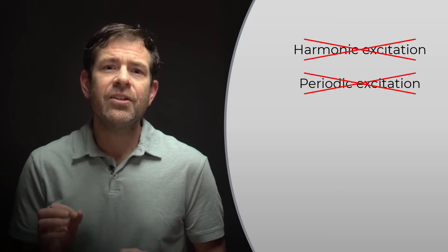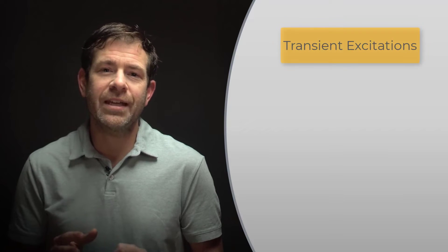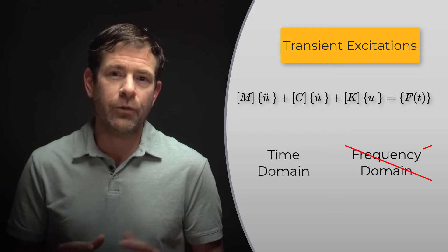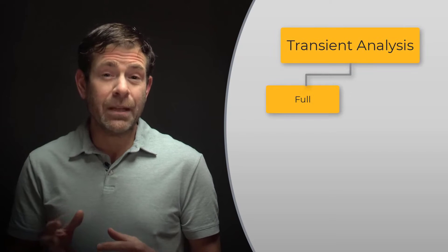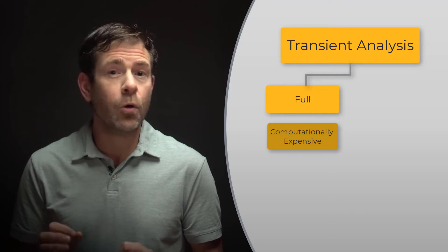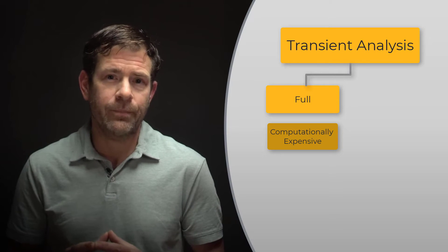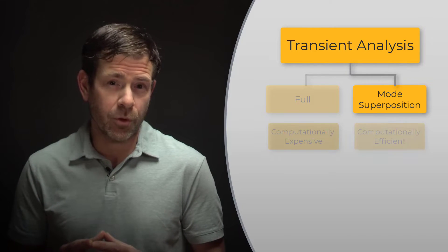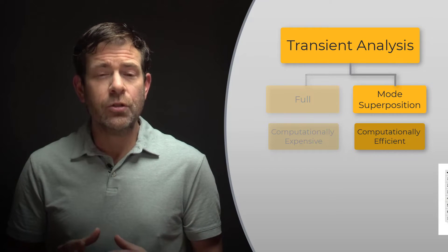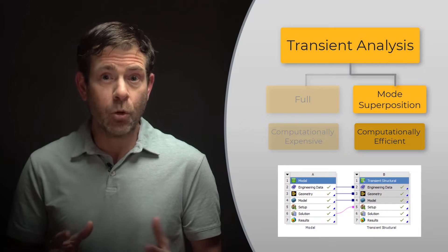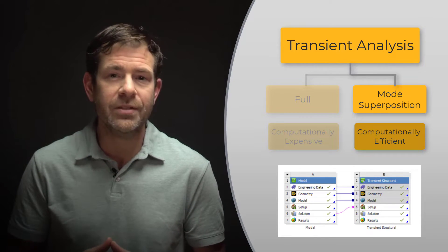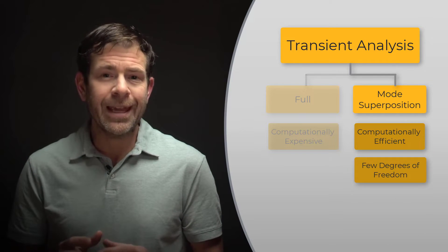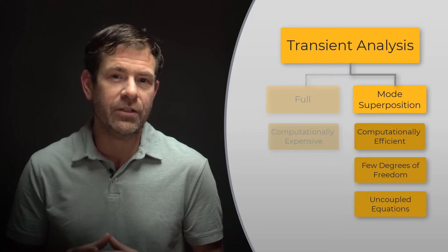In many practical situations, dynamic excitation is neither harmonic nor periodic. Such non-periodic excitations are often referred to as transient excitations that can vary arbitrarily with respect to time, and these must be solved in the time domain instead of the frequency domain. Simulating the transient response of a structure can be computationally expensive when solving the typical finite element matrices, also known as using the FULL method. The mode superposition method, also known as MSUP, provides a much more efficient approach. The MSUP method rearranges the equations of motion to modal coordinates, so the solver uses the natural frequencies and mode shapes from the modal analysis to calculate the response in the time domain. We end up with far fewer degrees of freedom, and the equations are uncoupled, so it becomes trivial for the solver to calculate the transient response.